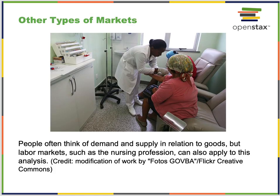People think of demand and supply in relation to goods, but labor markets — such as the nursing profession — can also be analyzed this way. How many people work as nurses, how many jobs there are for nurses, supply and demand affecting that. It also affects financial markets: the amount of money available for lending and the number of customers willing to borrow at various interest rates.